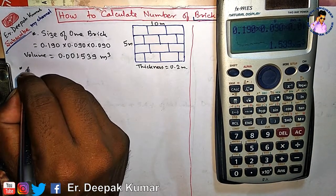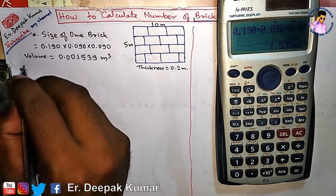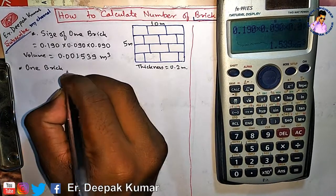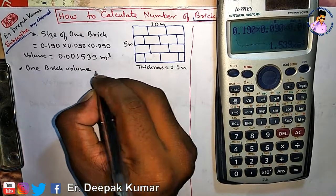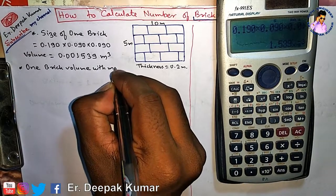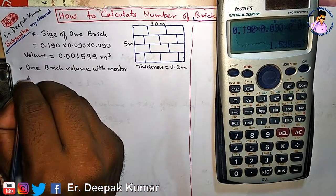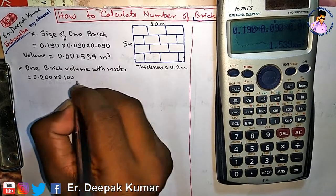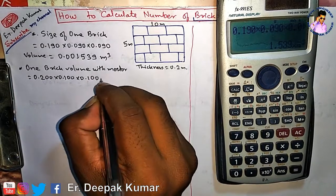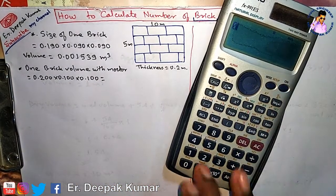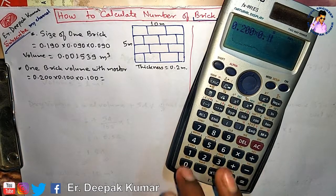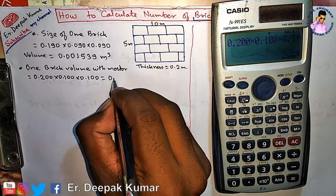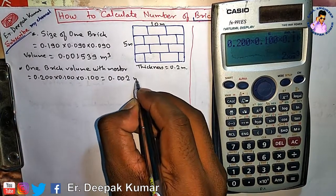We also know that if we include the mortar, then the volume of one brick with mortar is 0.200 × 0.100 × 0.100, which gives us 0.002 cubic meter.